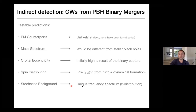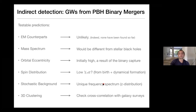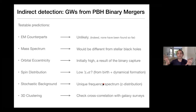The stochastic background coming from primordial black holes will have a unique frequency spectrum, different from the one that comes from stars. Finally, 3D clustering: if we're talking about the second mechanism where binaries mostly form in low dark matter mass halos, those are less correlated with the halos that host galaxies. So if you take a catalog of gravitational wave events and correlate it with a galaxy survey, you shouldn't necessarily see high cross-correlation if the second mechanism is in play.